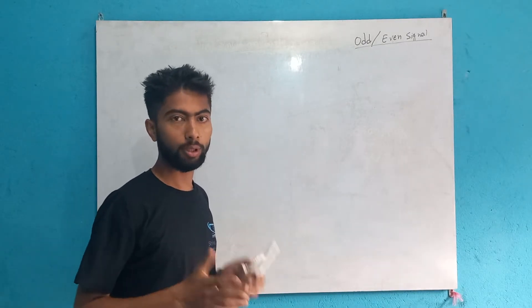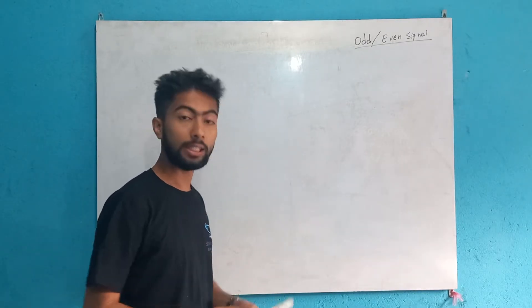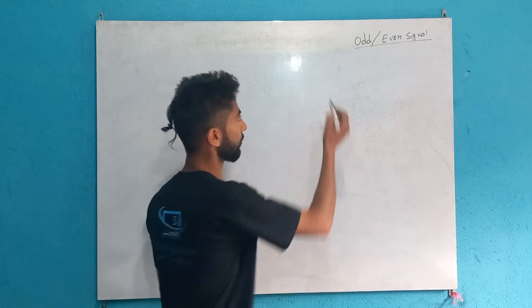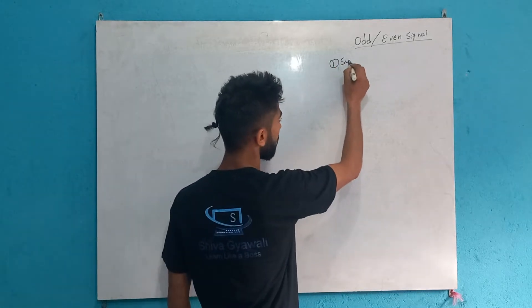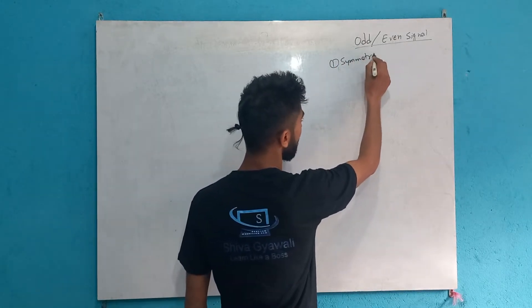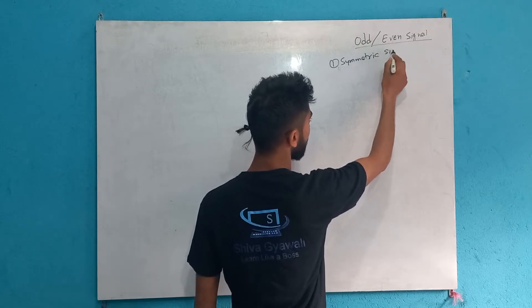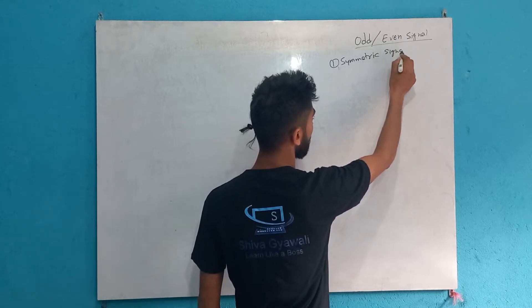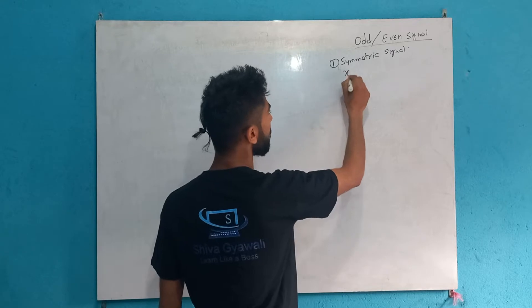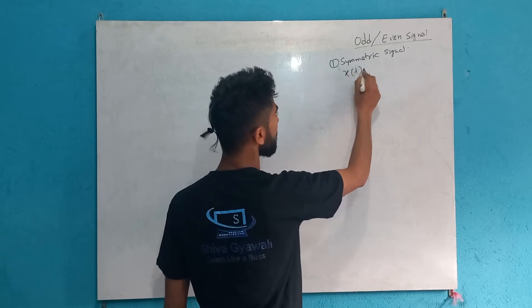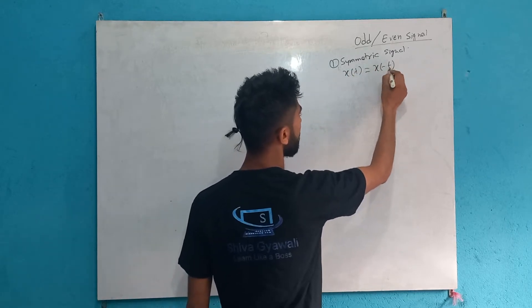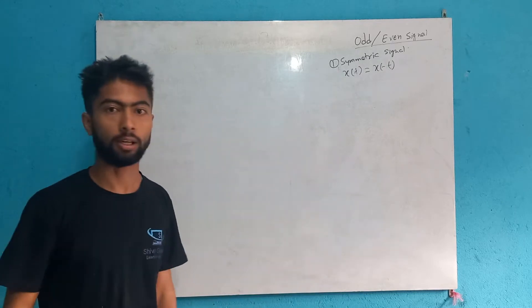Even signals are symmetric — they are the same type of signal, a symmetric signal. The condition for this is the symmetricity property: x(t) = x(-t). Whichever signal satisfies this condition is called an even signal.